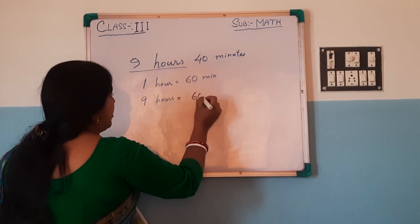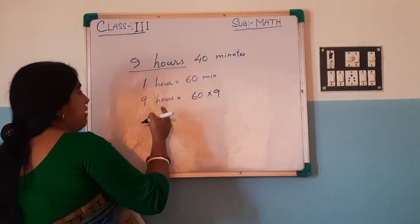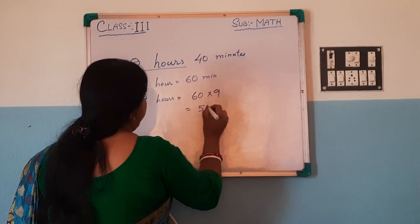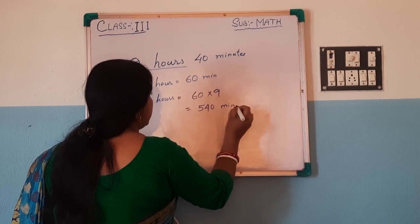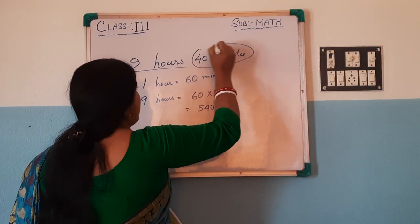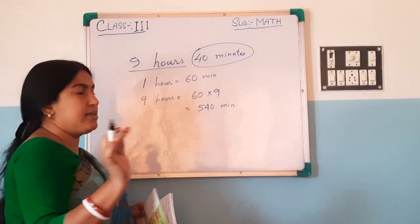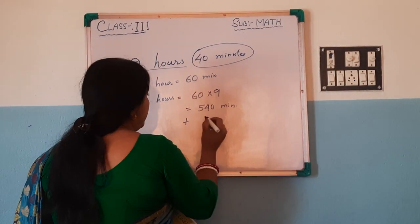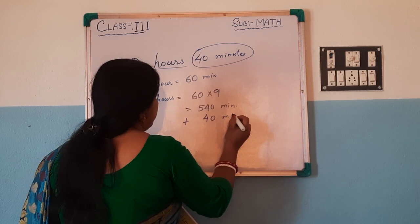9 hours is equal to 60 multiplied by 9, that is 540 minutes. And this 40 is already in minutes, so no need to convert it — just add it to the answer: 40 minutes.